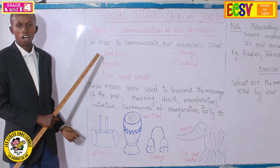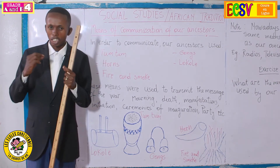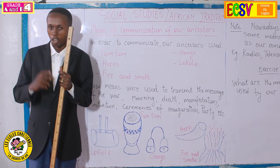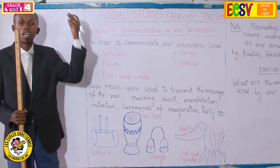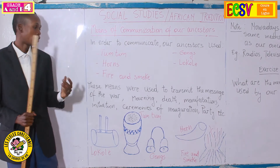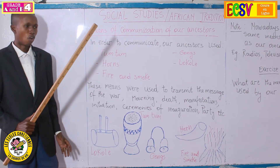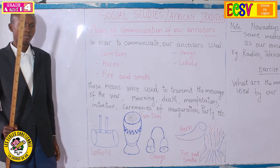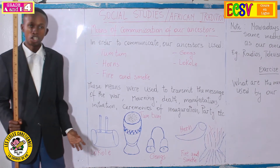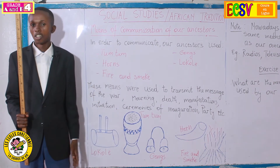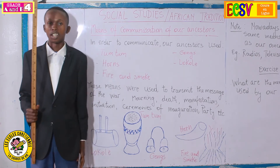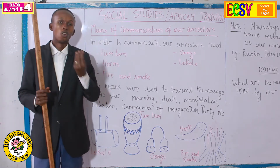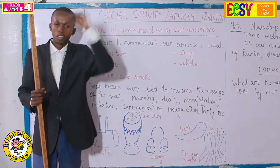Another means is horns. Today we use a whistle. By that time, there wasn't a whistle, and our ancestors used horns. But what is a horn? Where can we find a horn? We can find a horn — if you see a goat or a cow, they have horns. So they take them, and when you try to breathe into it, it sounds.